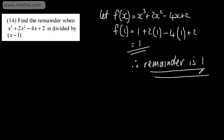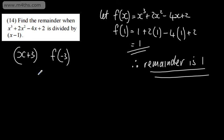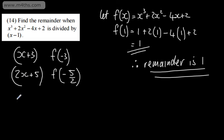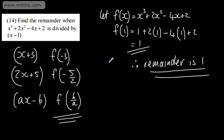You don't have to write all that out — I'm just showing the working. If we were asked to find the remainder when the same polynomial was divided by x plus 3, we would evaluate f(-3). If we had 2x plus 5, we would evaluate f(-5/2). In general, for a linear factor ax minus b, we evaluate f(b/a). If that value is 0, then that linear expression is a factor of the polynomial, which is the factor theorem.